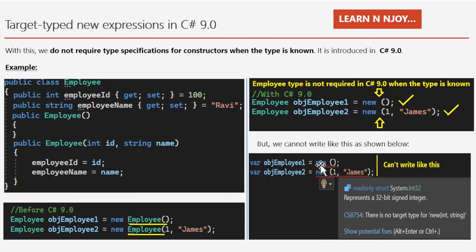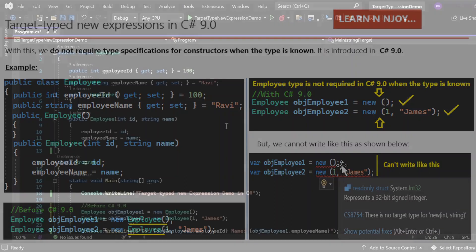However, we cannot write: var objImply1 = new; or var objImply2 = new(1, "James"); — you'll see a red squiggly line under the new keyword indicating an error: 'there is no target type.' When using var on the left side instead of an explicit type, you must provide the type on the right-hand side, otherwise we get an error because the code cannot determine which type of object to create.